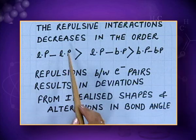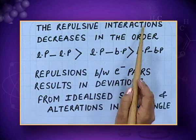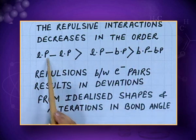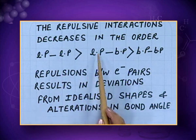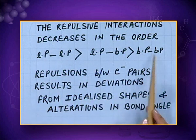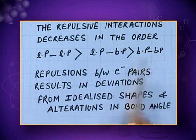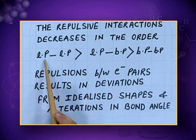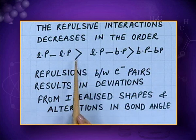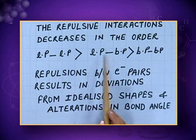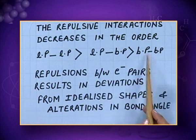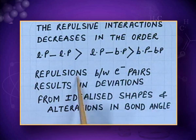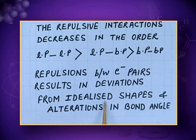There are three types of repulsions and the repulsive interactions decrease in the order: lone pair–lone pair repulsion, lone pair–bond pair repulsion, and bond pair–bond pair repulsion. Lone pair–lone pair repulsions are strongest, greater than lone pair–bond pair repulsion, which in turn is greater than bond pair–bond pair repulsion. These repulsions result in deviations from idealized shapes and alterations in bond angles.